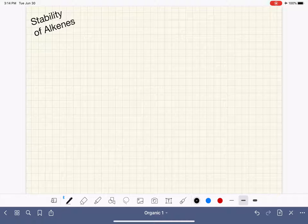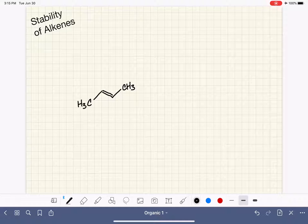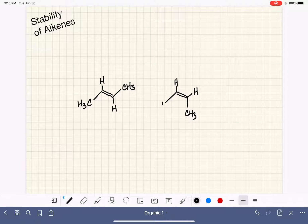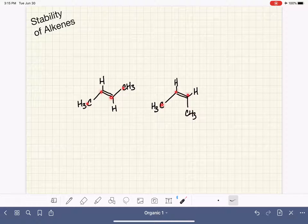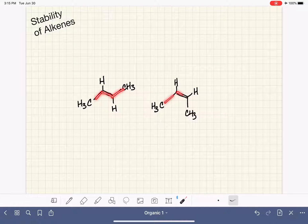We're going to start by looking at two alkenes that are very similar to each other. We're going to look at cis and trans-2-butene. Both of these alkenes have the exact same molecular formula. They're both four carbons, and the double bond is in the same position for both of them. The only thing that's different about these two alkenes is their stereochemistry.